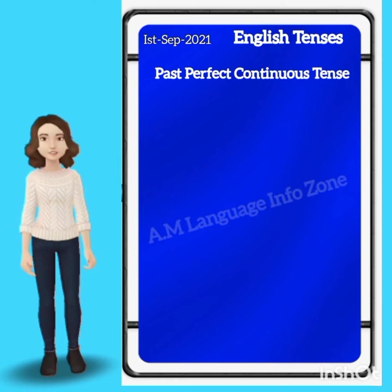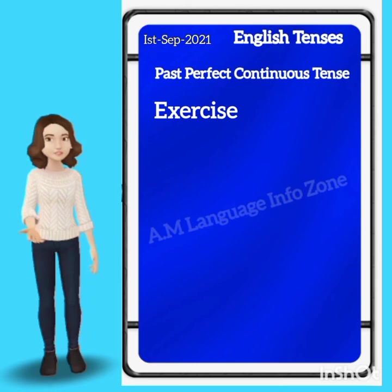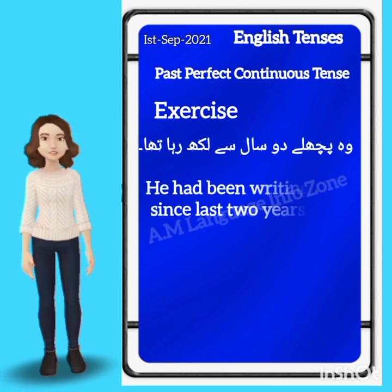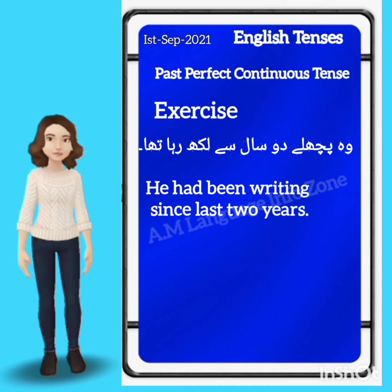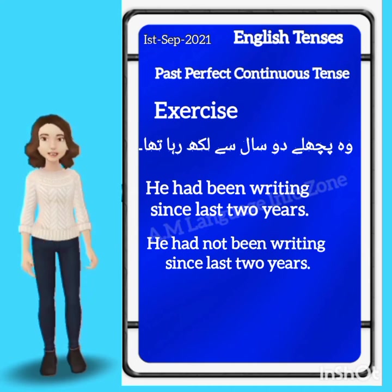Let's practice some sentences with 'since.' Affirmative: 'He had been writing since last two years.' Negative: 'He had not been writing since last two years.' This is the negative form.